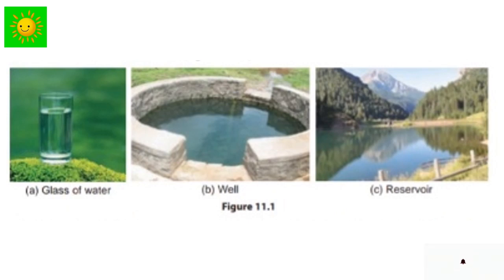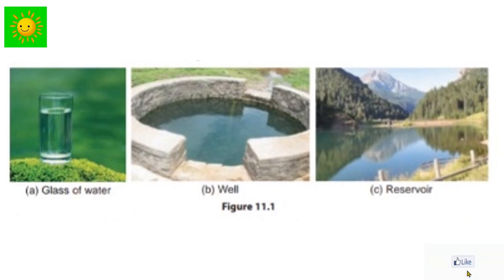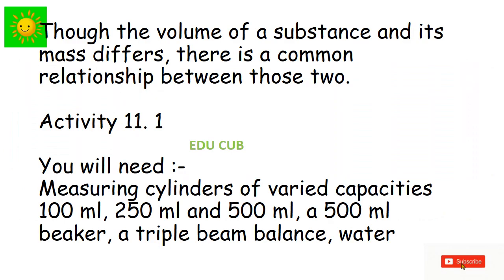The mass of water in a glass is also small. In a well, there is a large volume of water and the mass of it is also large. But when a reservoir is considered, the volume of water it contains is massive and the mass of it is also massive. So the volume of a substance and its mass differ, but there is a common relationship between those two.